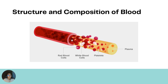Blood is not just a liquid — it contains a fluid with blood cells and platelets. The fluid part is known as plasma, and it constitutes about 55% by volume of the entire blood. The other 45% is made up of blood cells and platelets.